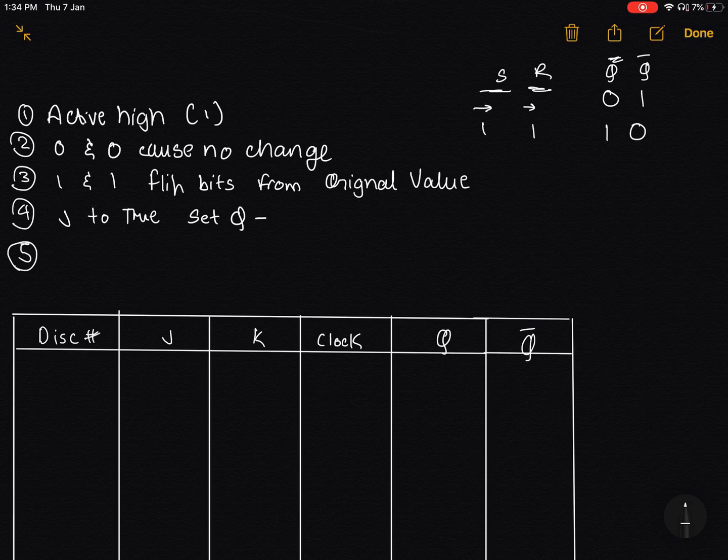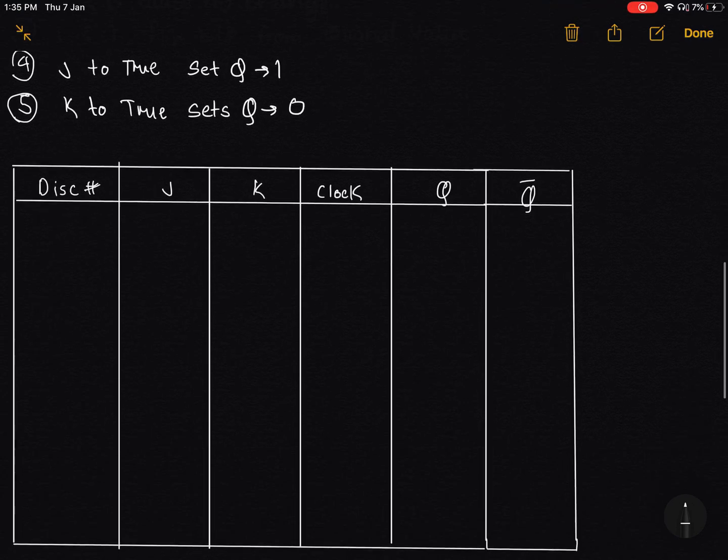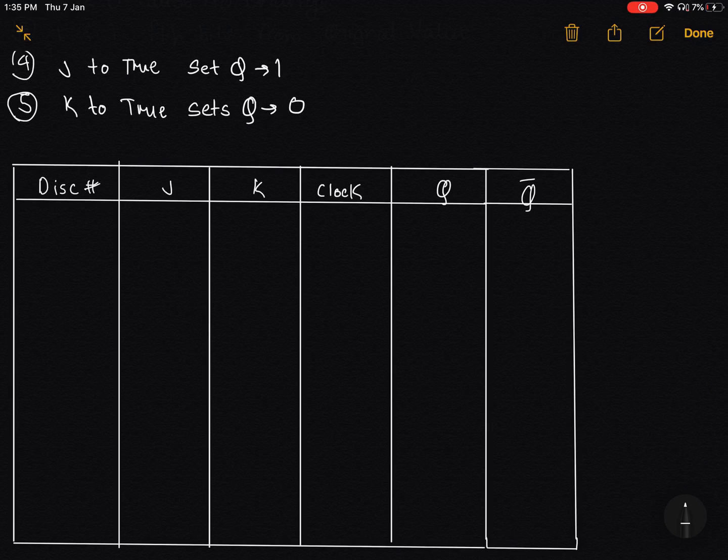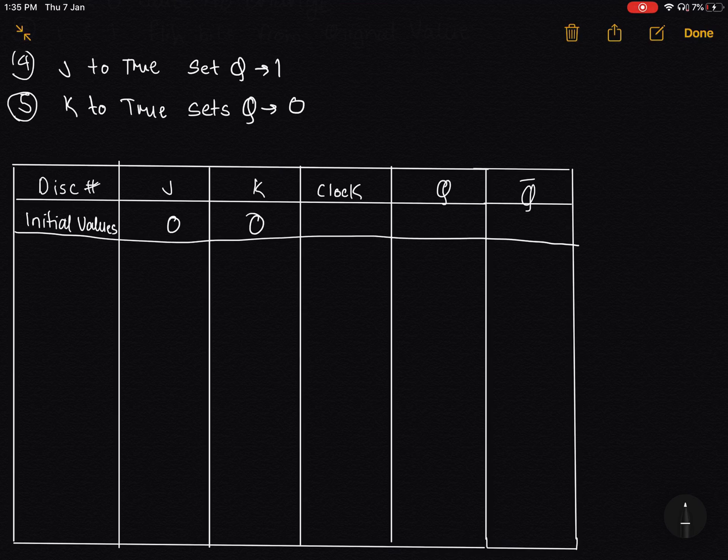And K to true sets Q to 0. Okay, so let's look at the truth table. Let's take some initial values. I will just be taking J = 0, K = 0, clock input as 1, and Q as 1 and Q complement as 0. Obviously, because they cannot be the same.